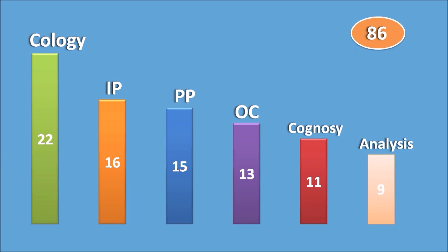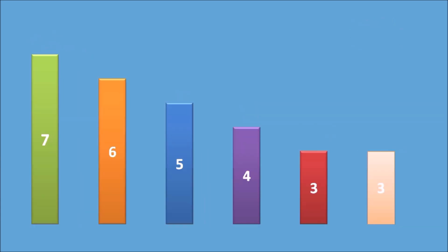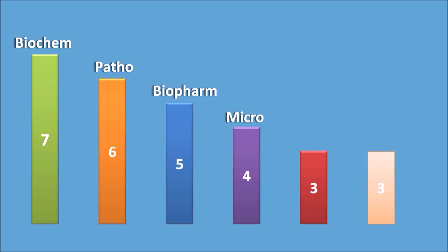Additionally, there were 7 questions from Biochemistry, 6 questions from Pathophysiology — which is gaining more importance from a competitive exam perspective — 5 questions from Biopharmaceutics, 4 questions from Microbiology, 3 questions from Anatomy and Physiology, and 3 questions from Calculations. Calculations are also giving a very important score in GPAT. These subjects together contribute 28 questions.